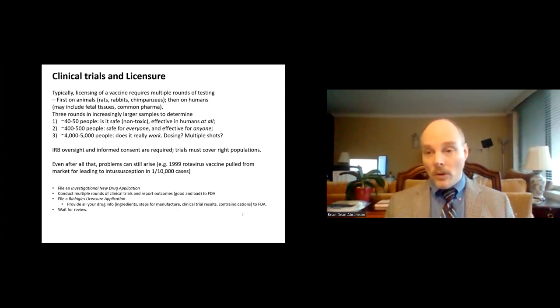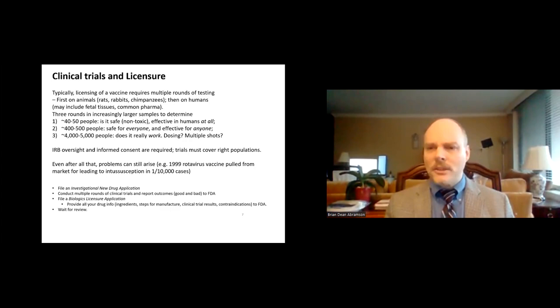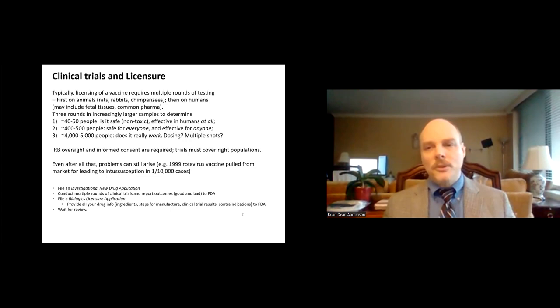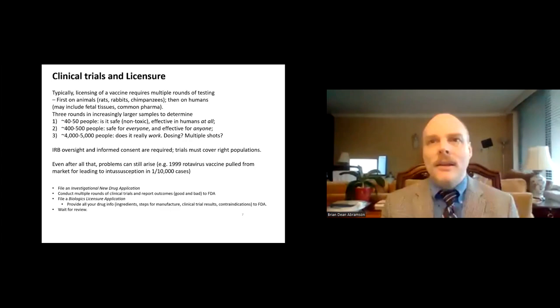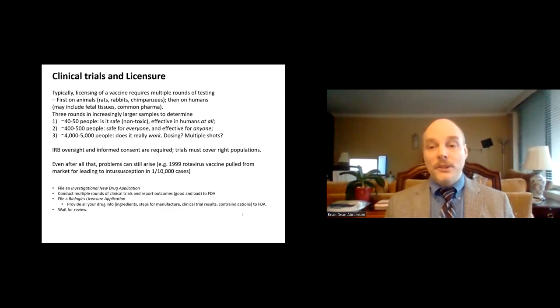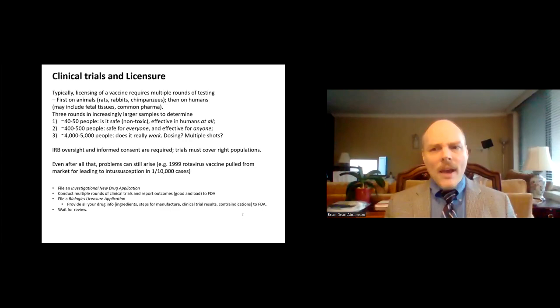Clinical trials have to be overseen by an institutional review board with university experts who are separate and uninvolved in the trial itself, examining how it's carried out. Participants have to give informed consent. The trials have to cover the right, diverse populations — sometimes you see a trial conducted in a small country with a homogenous population and you don't see if the product will have issues with a more diverse population. Even after all this, there are rare instances where problems arise that were not captured in clinical trials. For example, in 1999 a rotavirus vaccine was pulled from the market when it was found to lead to intussusception — a blockage — in about one in 10,000 cases.